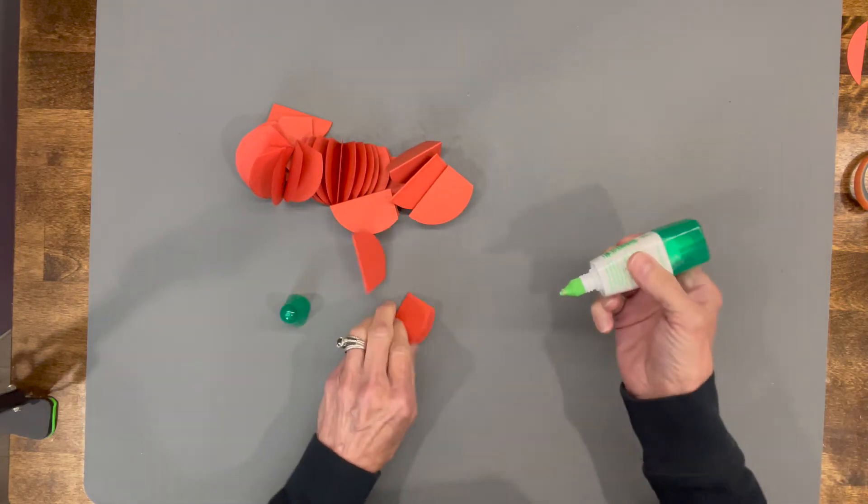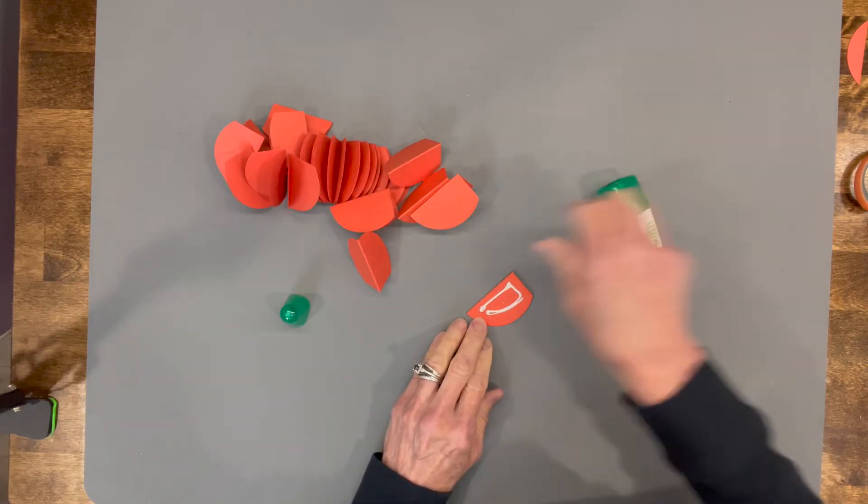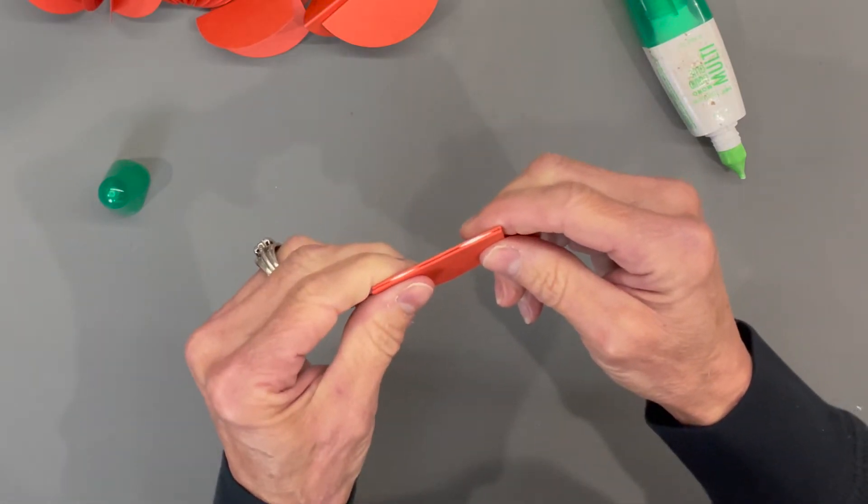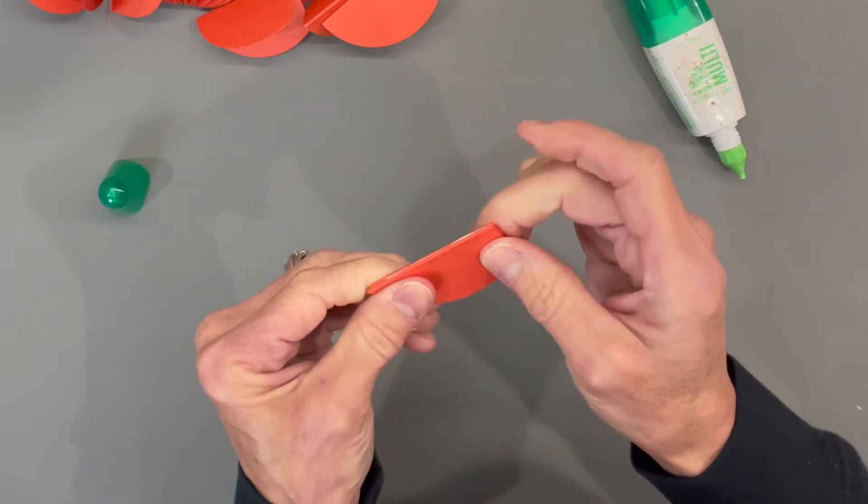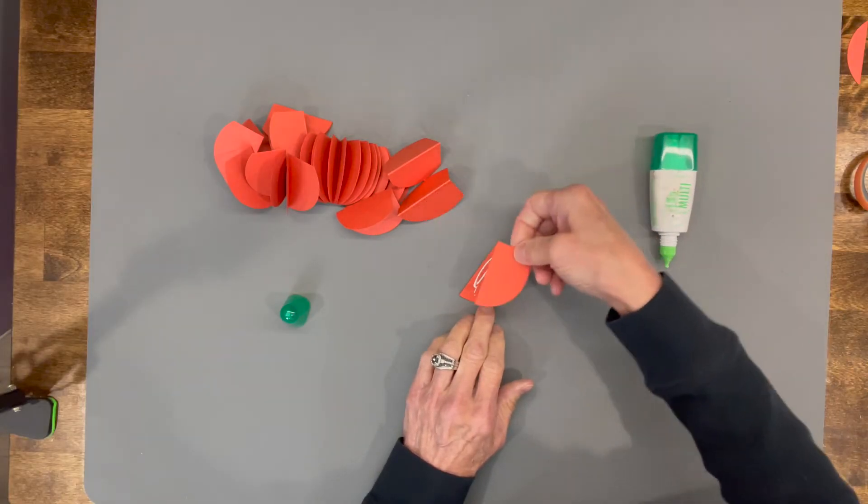Okay, next I'm using Tombow glue to start gluing these together. You're just going to start gluing them on top of each other. Just make sure that they are lined up. If you have any excess glue, you can go ahead and wipe it off. Just kind of check them every once in a while to make sure they're lined up, but you can go through this pretty quickly.